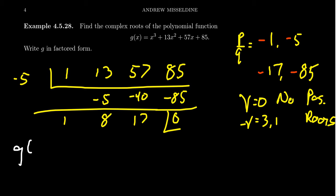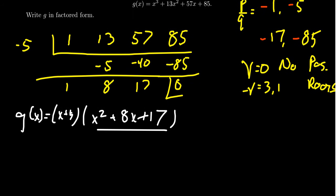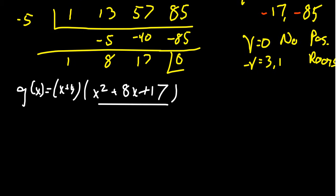So g of x can then be factored as x plus 5 times x squared plus 8x plus 17. As this polynomial is now quadratic, the quotient, I'm not going to try synthetic division whatsoever. Factors of 17 that add up to be 8 is not going to happen. 17 is a prime number, so my only option was going to be 1 plus 17, which is 18. That's not enough. So we can't factor this using those techniques whatsoever.